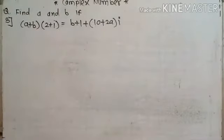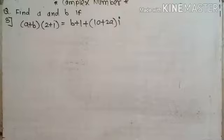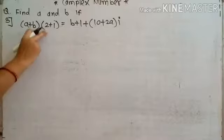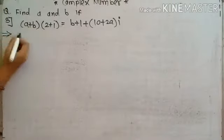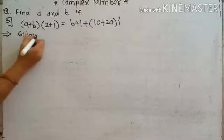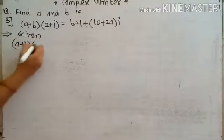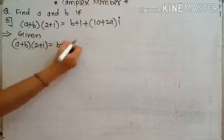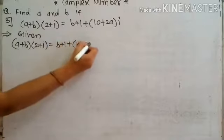The next example: a plus b into 2 plus i is equal to b plus 1 plus 10 plus 2a into i. Find the value of a and b. In this question, on the left side there is no separation of real and imaginary parts. Therefore, we first separate by multiplying out the two brackets. Given: a plus b into 2 plus i is equal to b plus 1 plus 10 plus 2a into i.